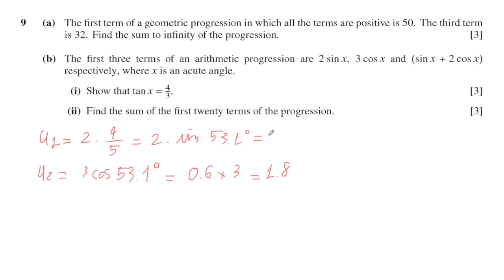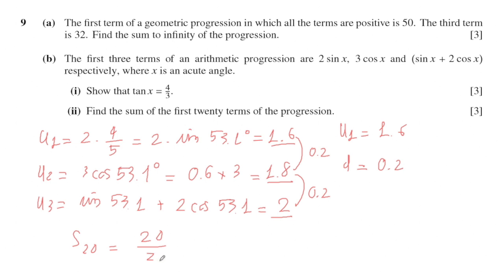u₃ equals sin x plus 2 cos x. Using the calculator, you will get 2. So from here, u₁ equals 1.6, u₂ equals 1.8, and u₃ equals 2. So it's easy to find u₁ equals 1.6, and the distance between them d is 0.2. Substitute into the formula to calculate, and you get the final answer.